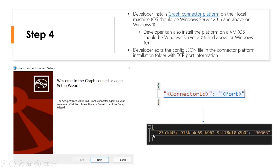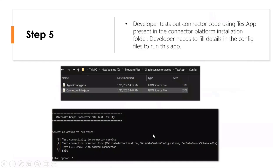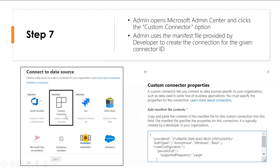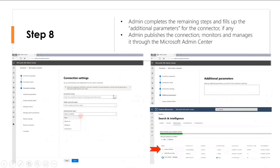Once you update configuration files, complete testing, and feel it's ready for production, you can go directly to the Admin Center. You'll see a new custom connector option — you update the manifest file and go through the familiar steps to publish the connector.